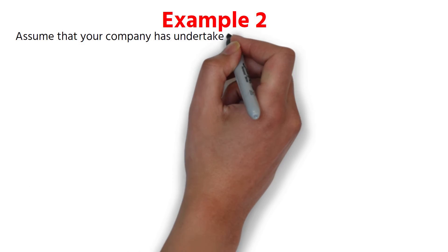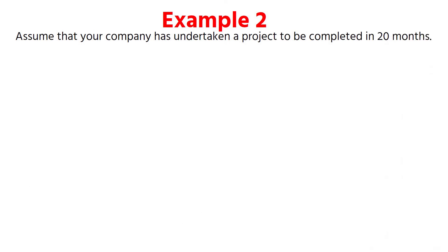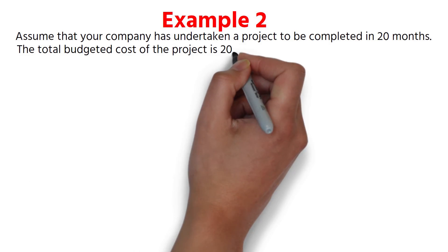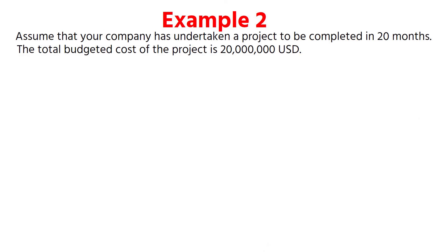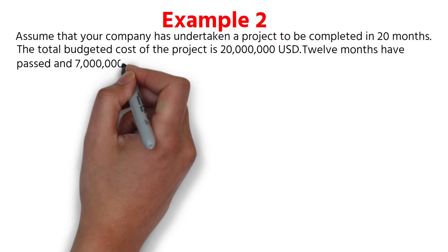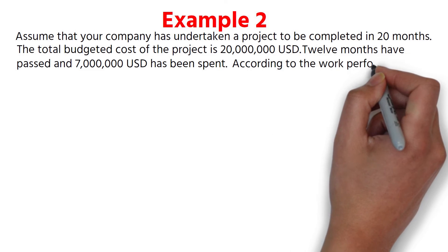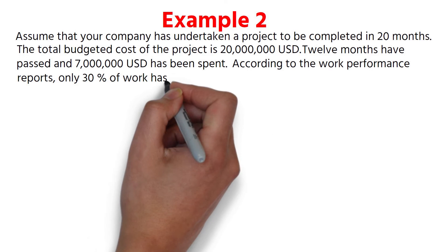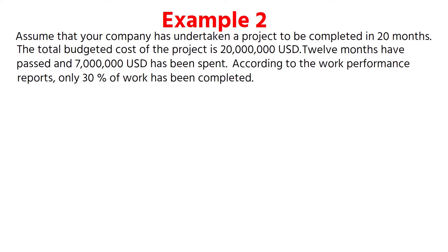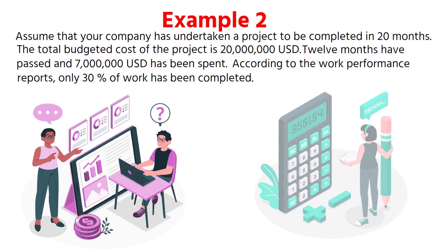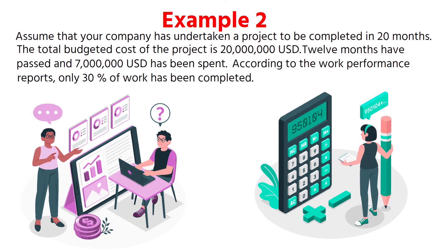Example 2. Assume that your company has undertaken a project to be completed in 20 months. The total budgeted cost of the project is 20 million US dollars. 12 months have passed and 7 million US dollars has been spent. According to the work performance reports, only 30% of work has been completed. Suppose that your project's cost performance will remain the same for the remaining works.